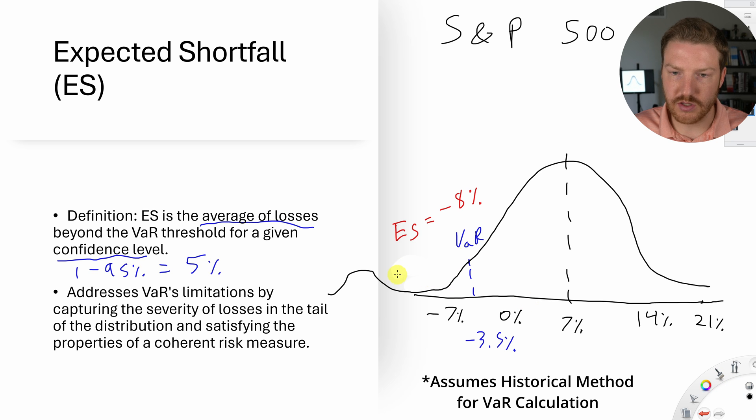The VaR doesn't change because this is still the 5th percentile cutoff. But now the expected shortfall actually is taking an average of all of these numbers. And so now instead of the expected shortfall sitting at negative 8%, we might find that our expected shortfall is now like negative 15%.